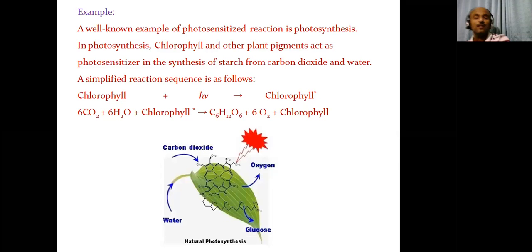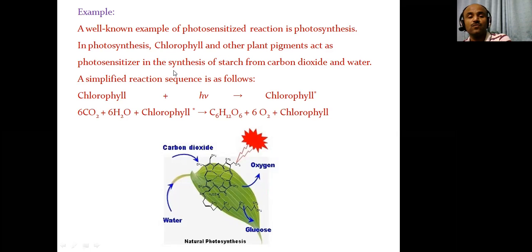A well-known example of a photosensitized reaction is photosynthesis. In photosynthesis, chlorophyll and other plant pigments act as photosensitizers in the synthesis of starch from carbon dioxide and water. The simplified reaction sequence is: chlorophyll + light → excited chlorophyll*; excited chlorophyll* + 6CO₂ + 6H₂O → glucose + O₂ + chlorophyll. This is illustrated with a diagram.